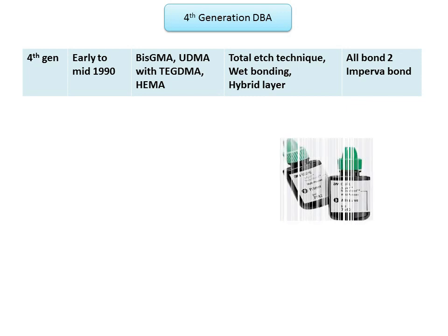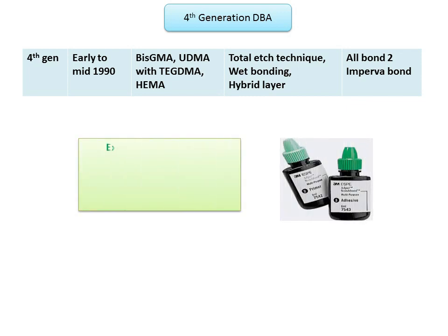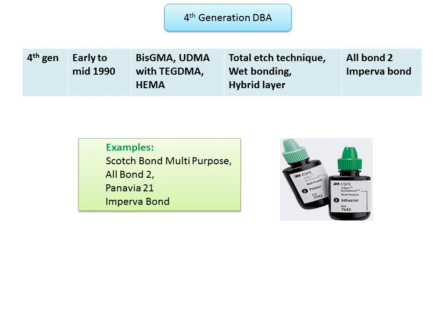Examples of fourth generation dentine bonding agents based on the total etch and moist bonding technique include Scotch Bond Multi-Purpose, All Bond 2, Pinavia 21, and Imperva Bond.